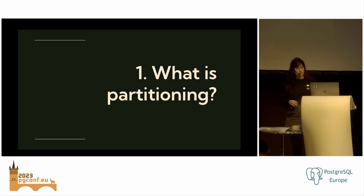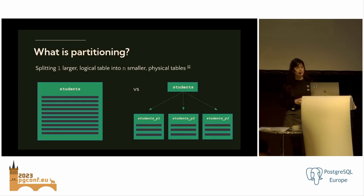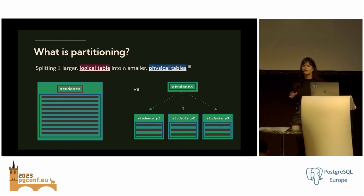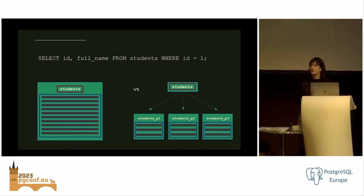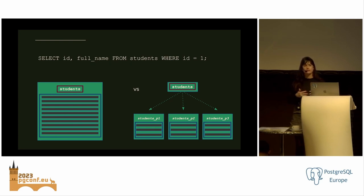What is partitioning? Partitioning is the act of splitting one large logical table into n smaller physical tables. In this example, we have a logical table called students. In the unpartitioned version, one logical table maps to one physical table space. However, in a partitioned version, students is the parent table to n partition tables under the hood. In both examples, you can run the same query — select some data from students where id equals something — but in the partitioned version, it routes the query to one or more child tables.